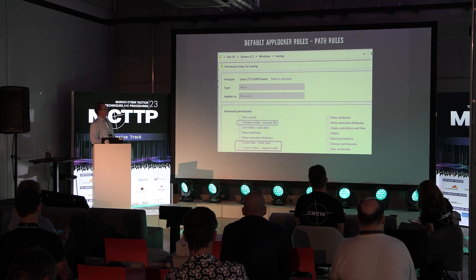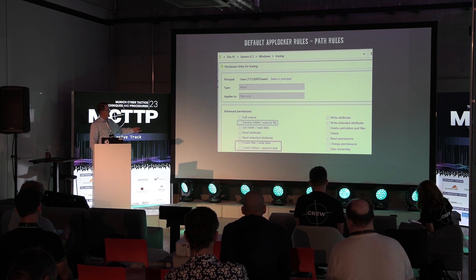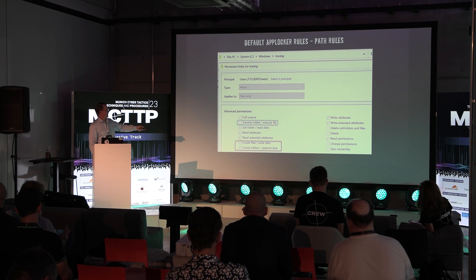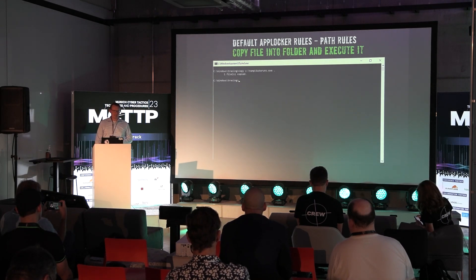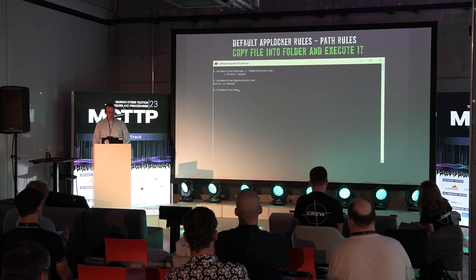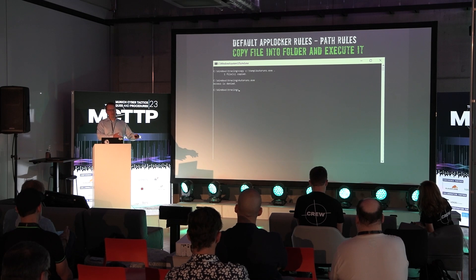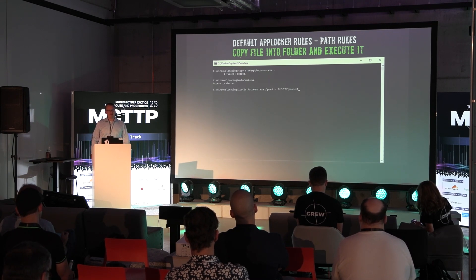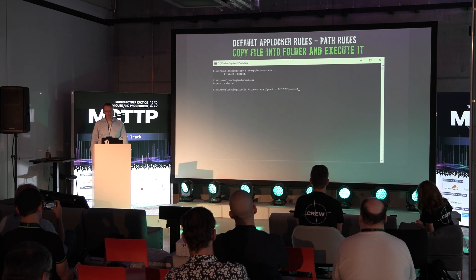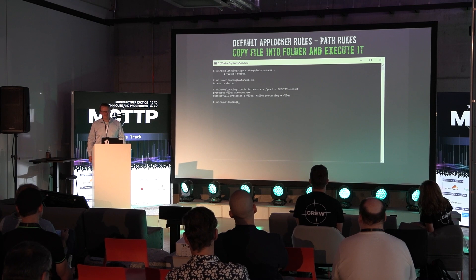Another example: the Windows\Tracing folder. The ACLs aren't exactly the same - I'm missing Execute File. But I do have Create Files, Create Folders, Write Data, and Append Data. If I just copy the file into the tracing folder and try to run it, I get 'access is denied' - not blocked by AppLocker, but by ACLs because I don't have execute permission on that file. Let's try something silly: can we just set full ACLs with icacls? That can't possibly work... yes, it can. You can even execute it afterwards.